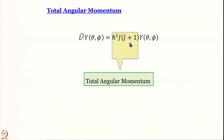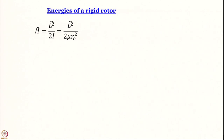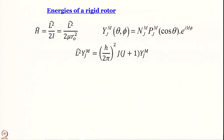How did we obtain the Hamiltonian? We obtained it by dividing the square of the angular momentum operator by 2I. That 2I is essentially a constant for the molecule, so the Hamiltonian is L²/2μr₀². Operating on the wave function, L² gives us (h/2π)² multiplied by J(J+1) — this is the Schrödinger equation.